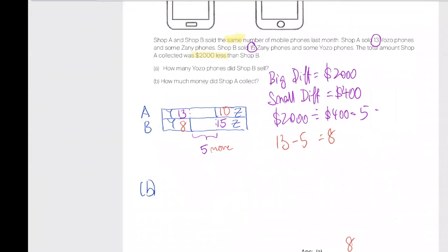So B is very easy. Shop A collected, basically, 13 Yozo phones, 13 times 599, and Shop A also sold 10. Can someone quickly punch in the numbers and let me know what's the answer for this? Teacher, can I ask you something? Zeny phone's phone, how do you get 10?